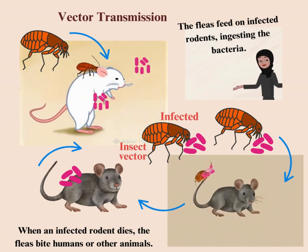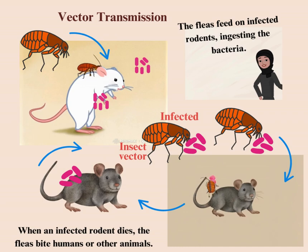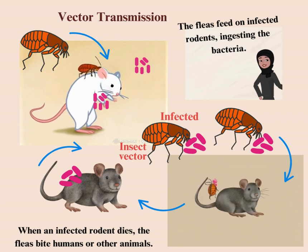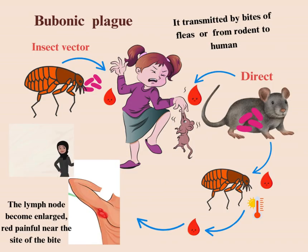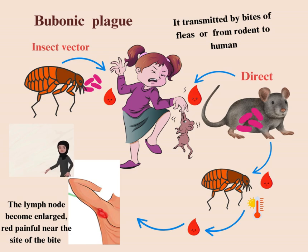When an infected rodent dies, the fleas leave the dead host and seek new sources of blood, often biting humans or other animals. When a rat flea feeds on an infected rat, the ingested organisms multiply in the gut of the flea, aided by coagulase which blocks the proventriculus, so that when it bites a human, it contaminates the bite wound with Yersinia via regurgitation.